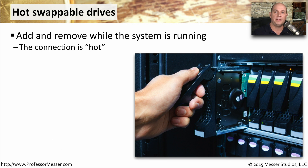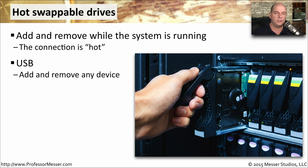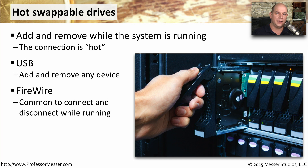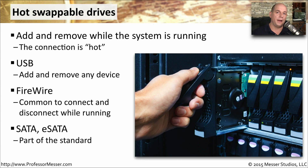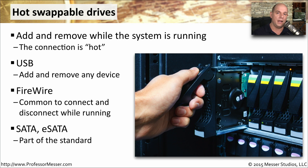If you've worked with hard drive arrays before, you're probably familiar with hot swappable drives. A hot swappable drive is one that you can remove or insert into a computer without having to power anything down — it's a hot connection, so you can plug and unplug whenever you'd like. One common type is a USB drive. There are also FireWire drives, where we connect and disconnect using an external FireWire cable. The SATA standard also supports hot swappability, commonly used with hard drive arrays where you can slide drives in or out in real time. The SATA standard also includes eSATA — external SATA — where an external cable connects to an external drive array, which is also a hot swappable drive type.